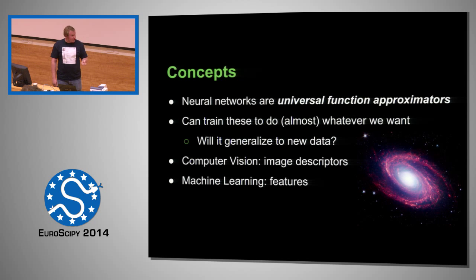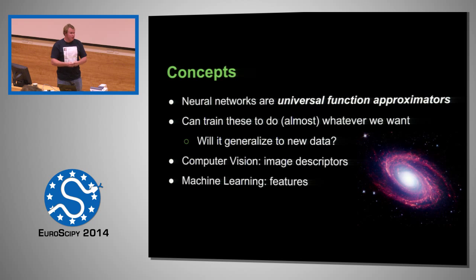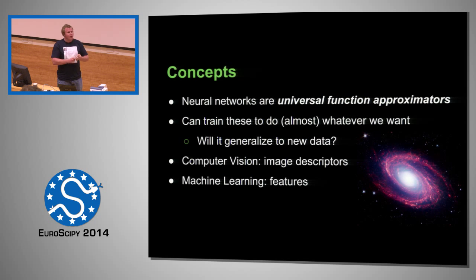A neural network is a universal function approximator. Despite the name, really the goal is to take some input and map it to some other output, and they are very, very good at this. If you've done machine learning, you know that overfitting is a problem, and neural networks are the kings of overfitting. One of the big problems that has historically plagued deep learning is the inability to generalize — you feed it one image of a sloth, and then you give it another and everything breaks.